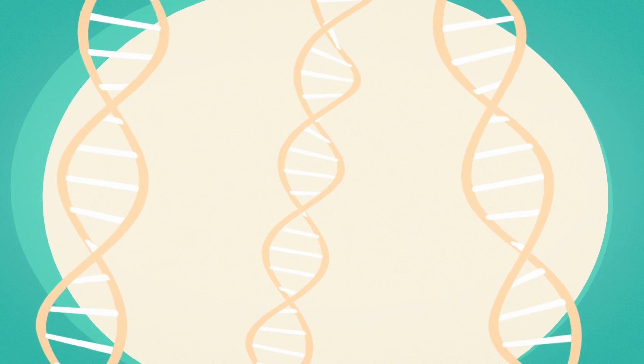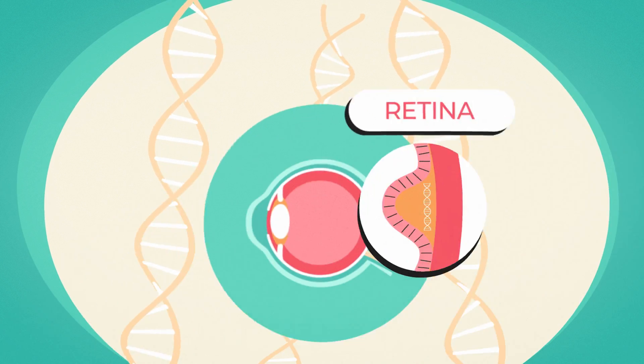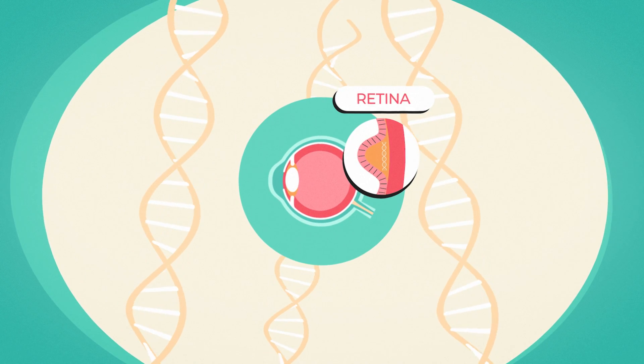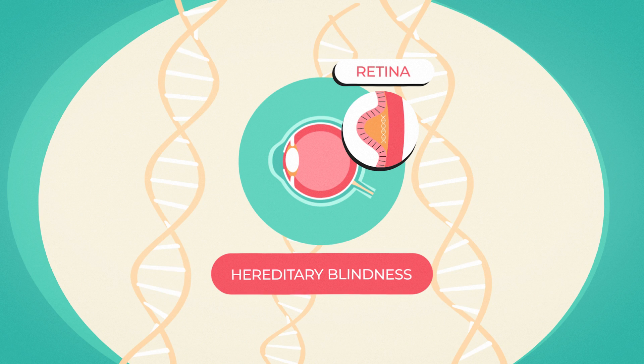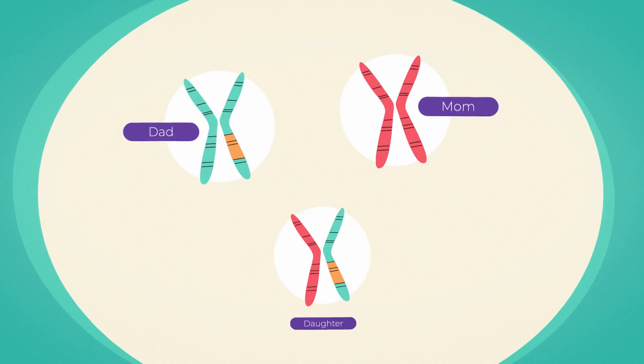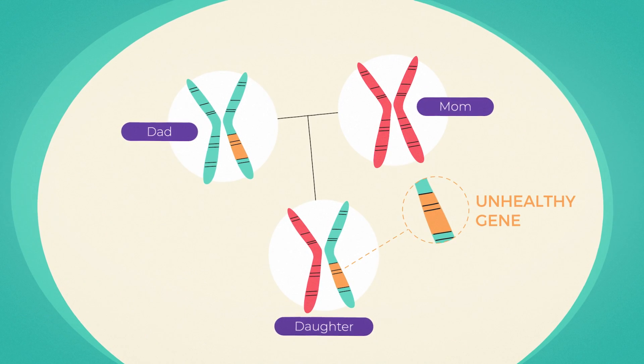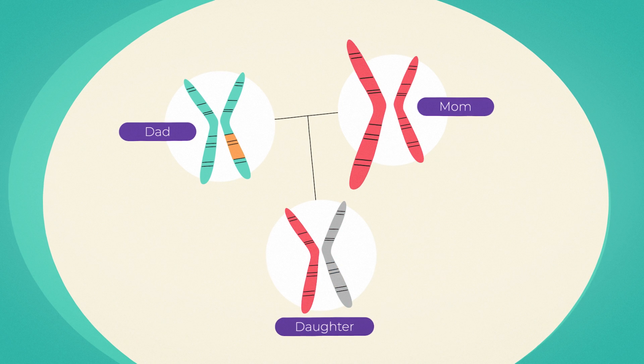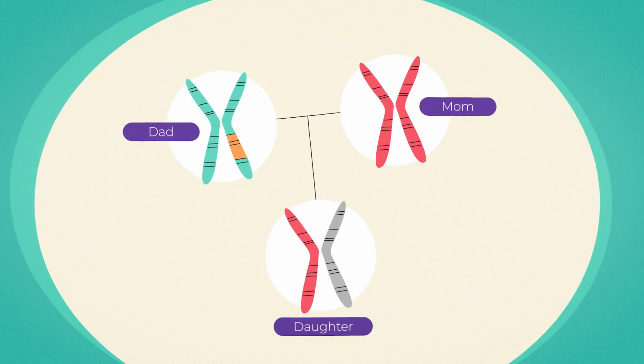But we're still pretty far off from building custom creatures. In the future, CRISPR might treat genetic disorders like hereditary blindness. If it can knock out the unhealthy gene from one parent, the healthy parent's gene gets used instead to build our genetic code.